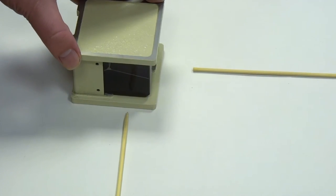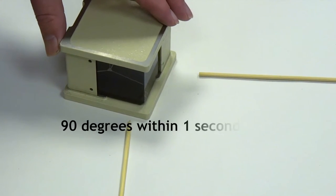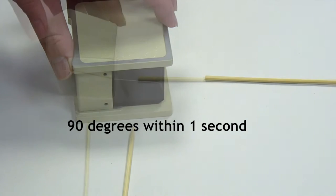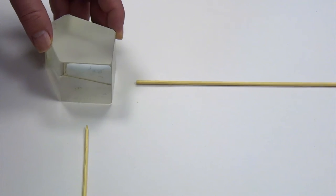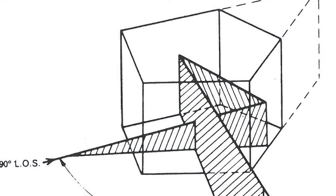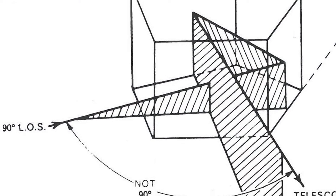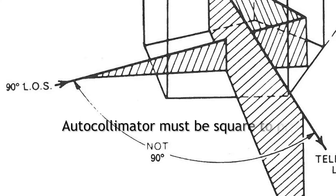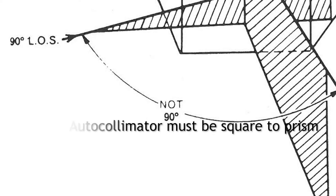As long as the front face of the pentagonal prism is square to the autocollimator, the line of sight or beam will be bent by 90 degrees. If things are not lined up square, i.e. the prism face is tilted forward, we can get an error in the 90 degree.